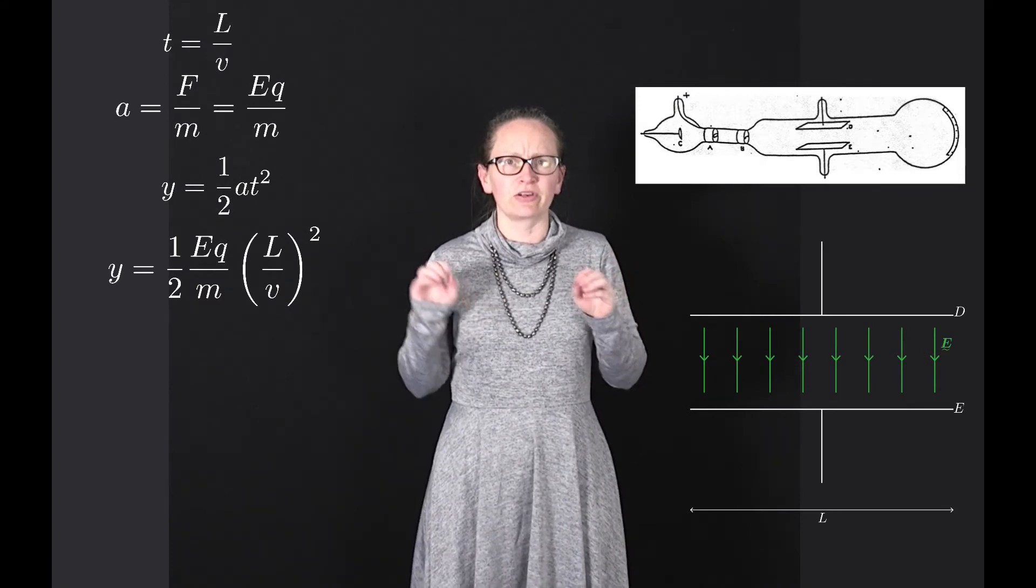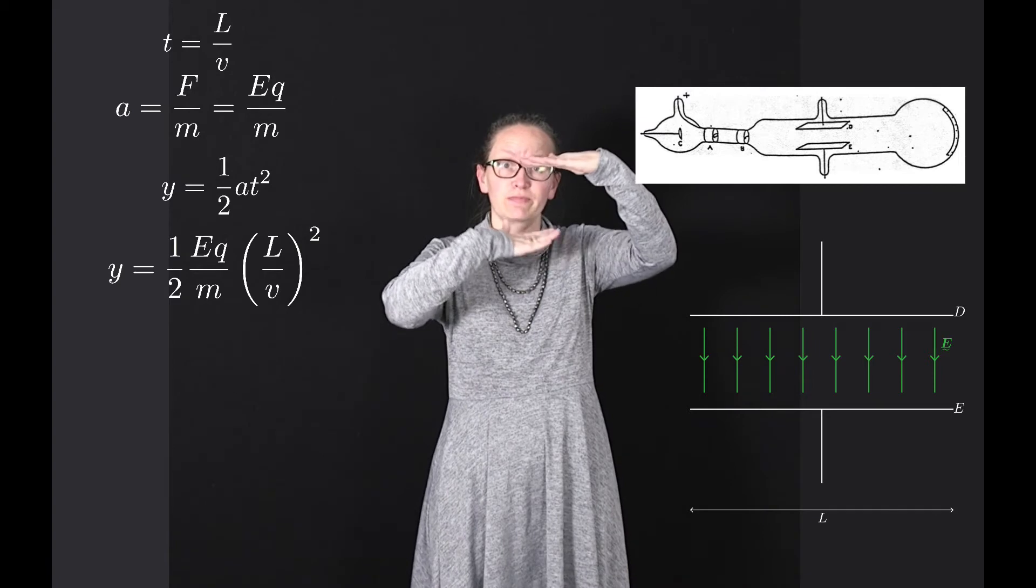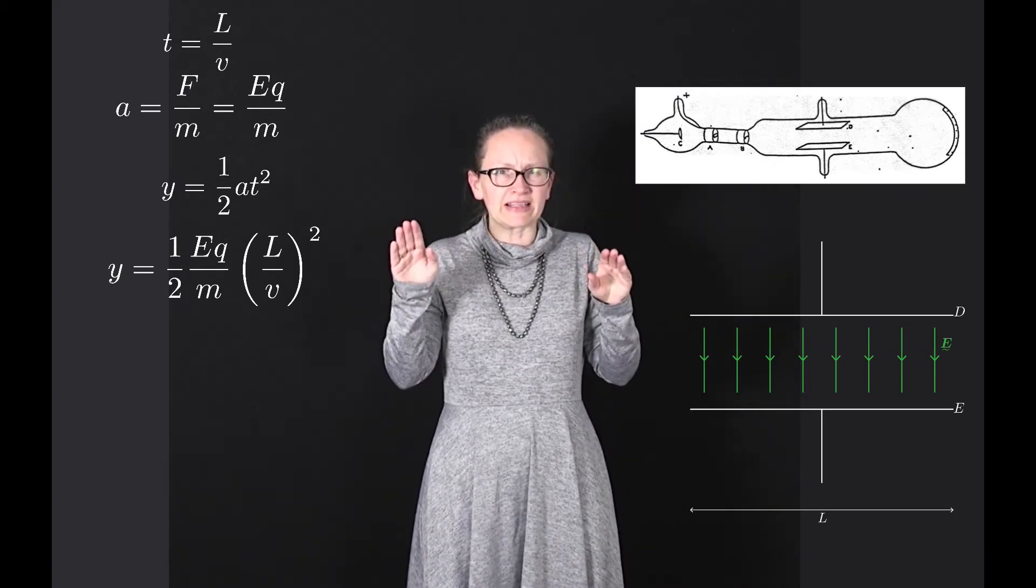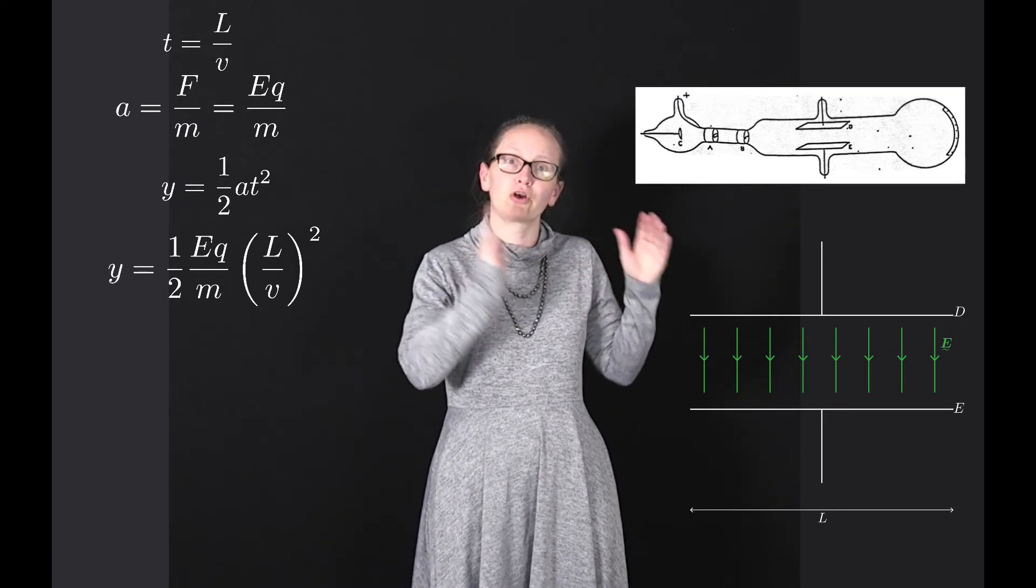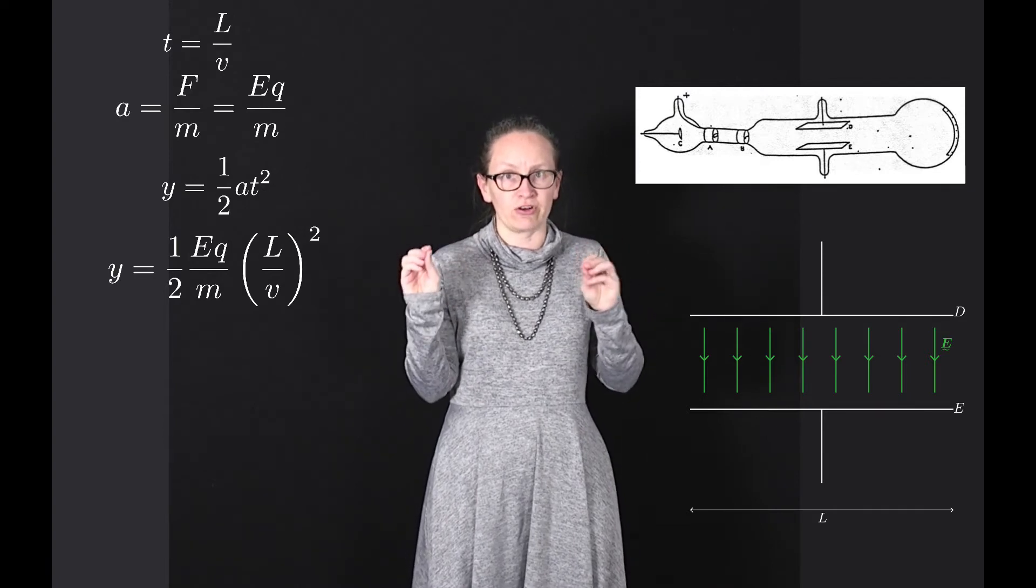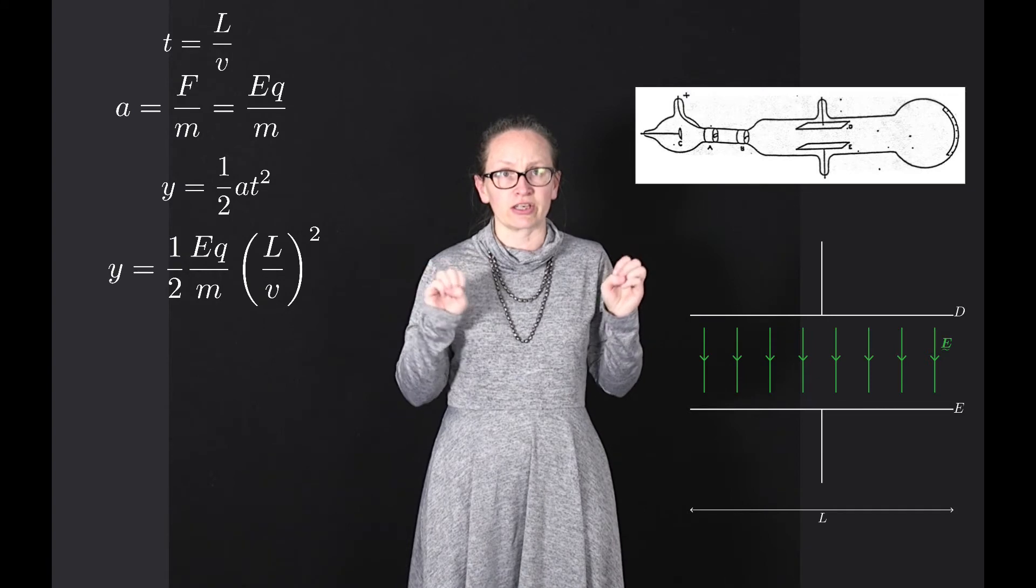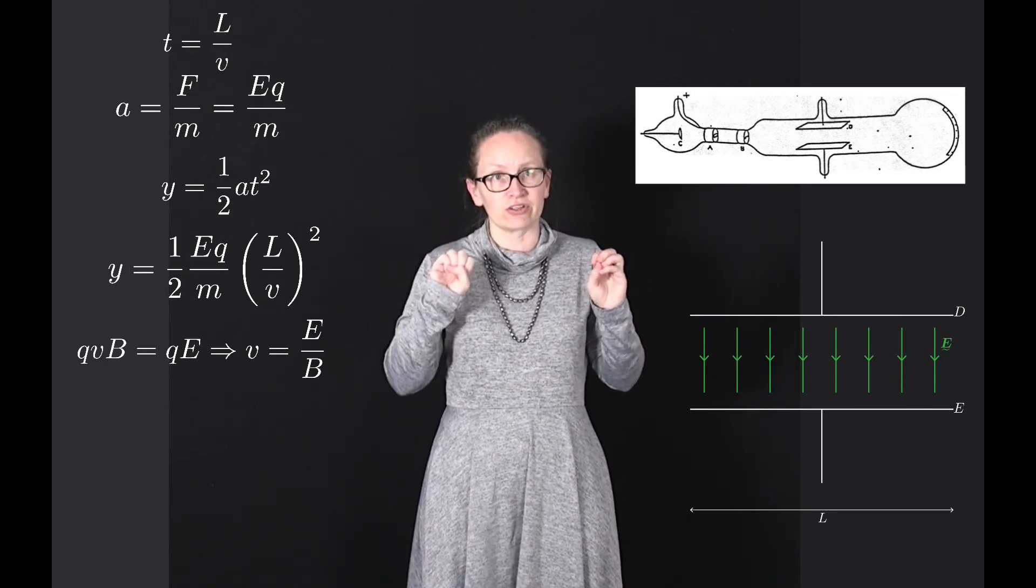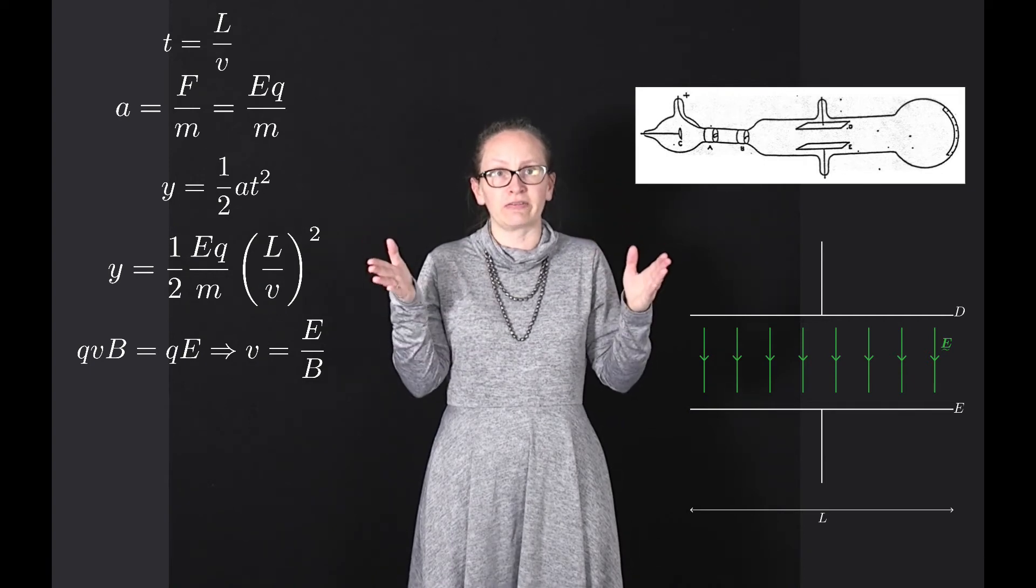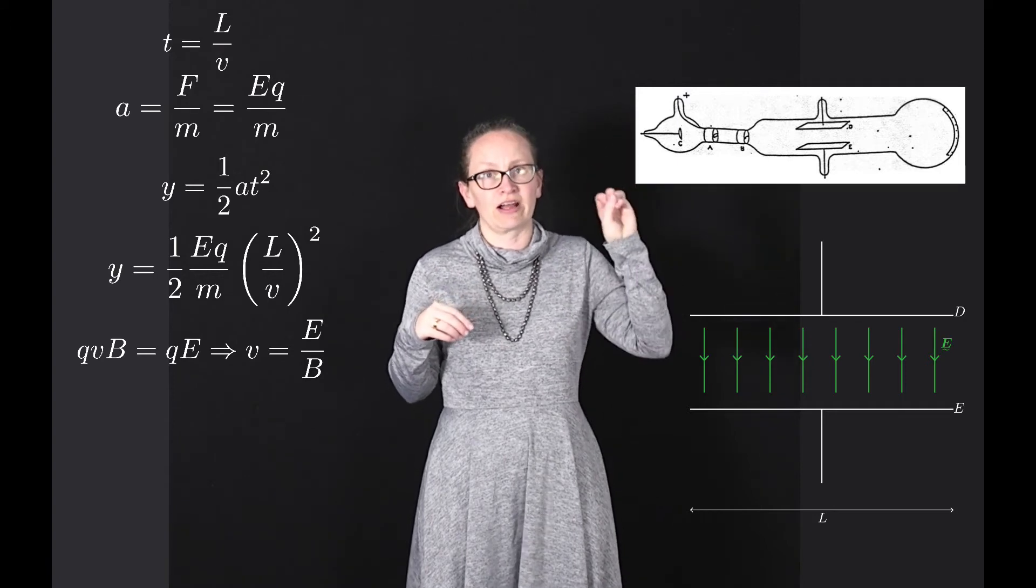Thomson realized that he could find the velocity of the electron as it entered the region between the plates by applying a magnetic field. If he applied a magnetic field until there was no deflection of the electron, this would tell him that the magnetic force and the electric force were balanced. As an equation, he could write qvB, the magnetic force, equals qE, the electric force, which he could rearrange to get that the velocity of the electron was equal to E divided by B.